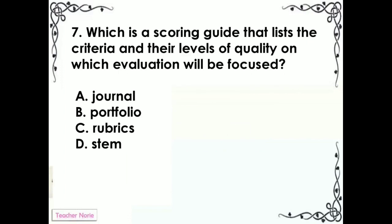Which is a scoring guide that lists the criteria and their levels of quality on which evaluation will be focused? A. Journal. B. Portfolio. C. Rubrics. D. STEM.